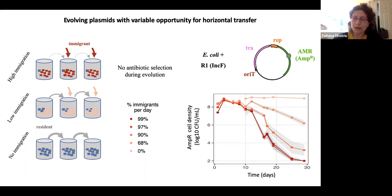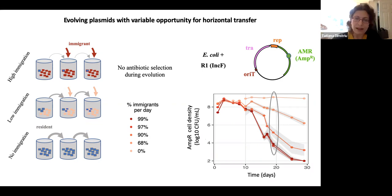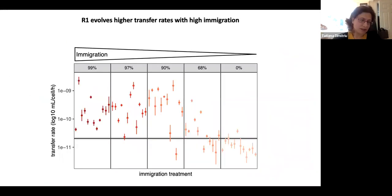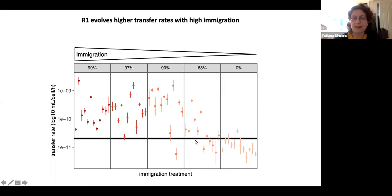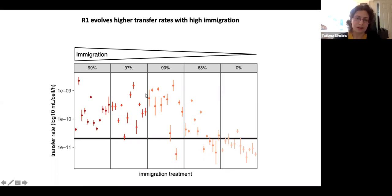I took one clone per lineage at an intermediate time point, at which we could collect plasmids from each population before they went extinct, and I measured their conjugative transfer rates. The y-axis shows the transfer rate of the plasmid; clones are ordered by immigration treatment with high immigration on the left. The black line is the transfer rate of the ancestor. As predicted, we saw significantly increased conjugation rates for all high immigration treatments — plasmids evolved higher transfer rates.